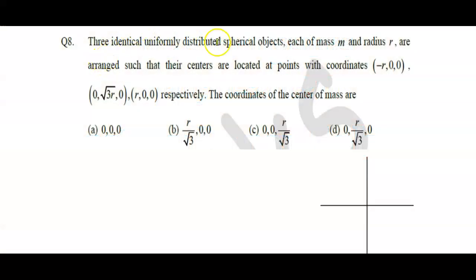Three identical uniformly distributed spherical objects, each of mass M and radius R, are arranged such that their centers are located at points with coordinates (-R, 0, 0), (0, √3R, 0), and (R, 0, 0) respectively.